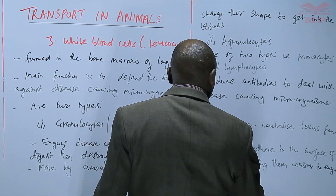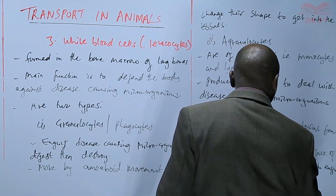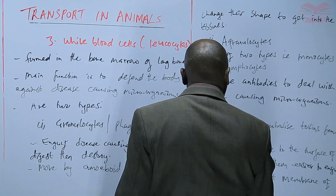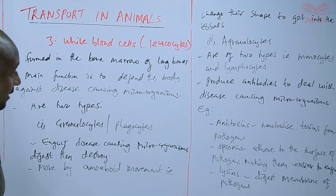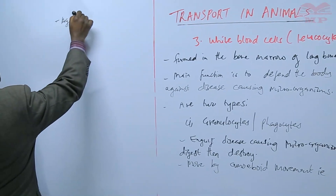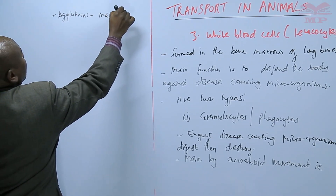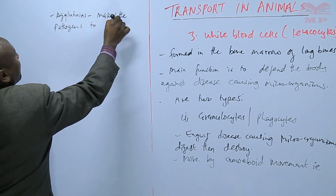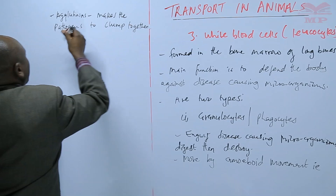Some antibodies are called lysins. These ones digest the membranes of pathogens. And finally, there are others called agglutinins, and these ones make the pathogens clamp together and die.